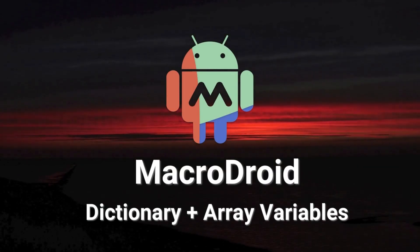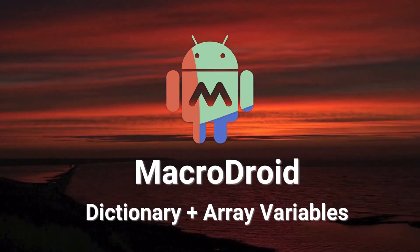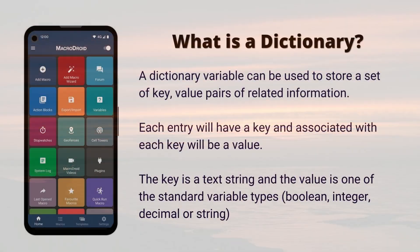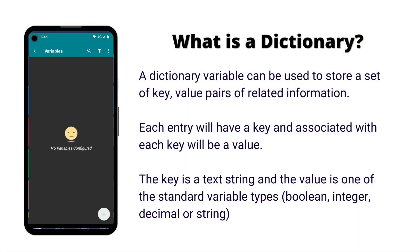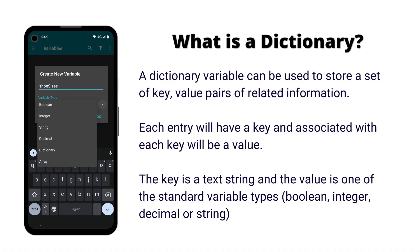In this video we will show how to use dictionary and array variables in MacroDroid. A dictionary variable can store multiple entries where each entry has a key, which is a text string, and a value which can be any standard variable type.